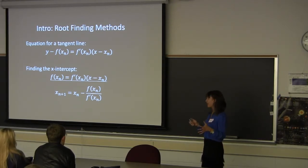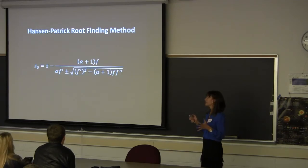They were all derived separately, and after all of those were established, these two mathematicians came in, Hanson and Patrick, and they introduced a new variable alpha. And what this alpha variable did is by varying alpha, you could actually derive these other root-finding methods, which was really cool.